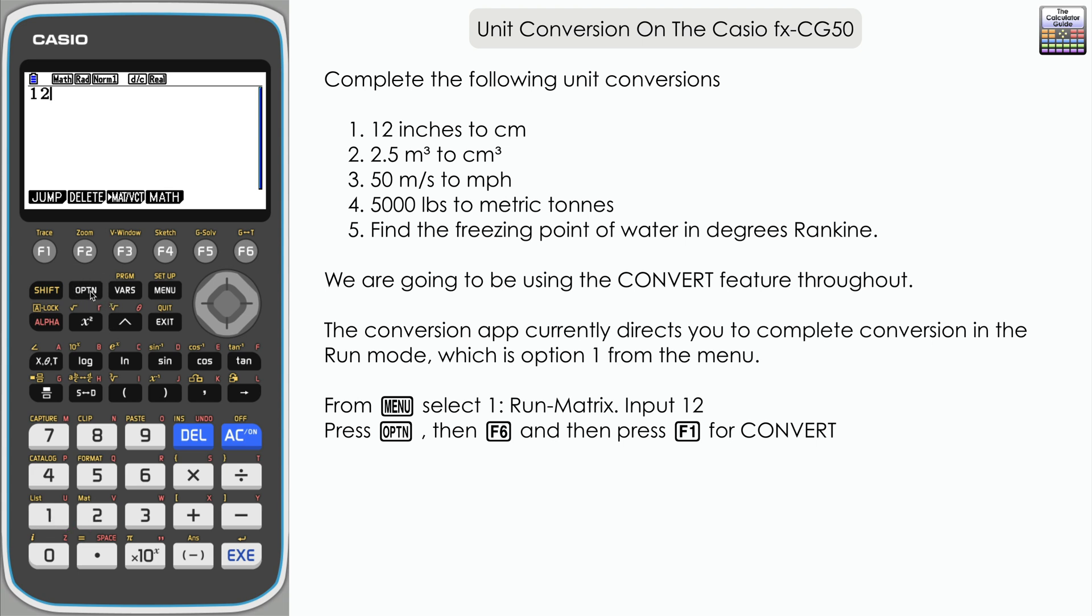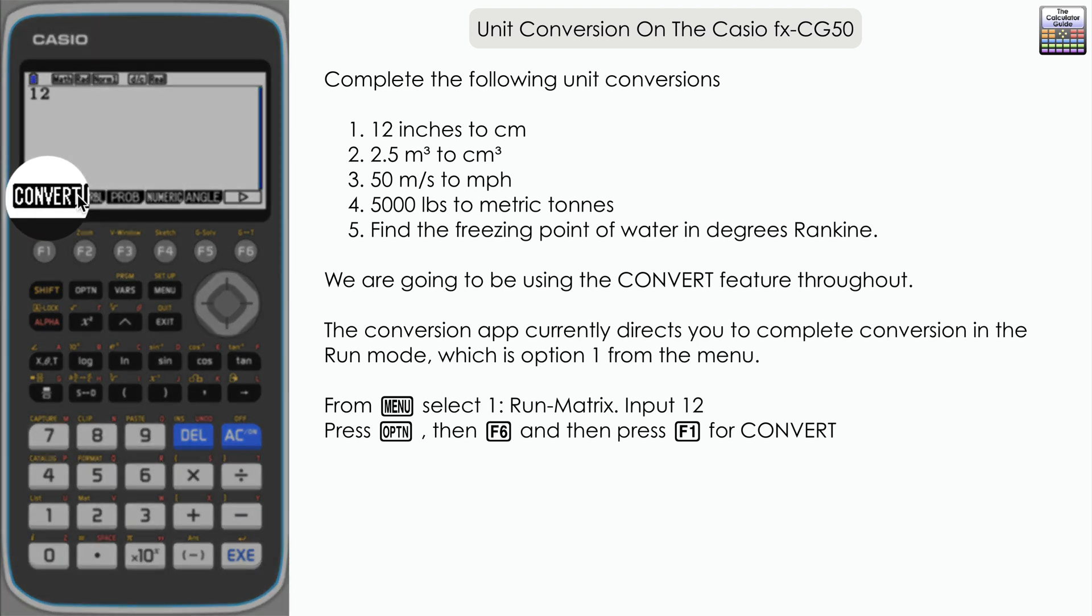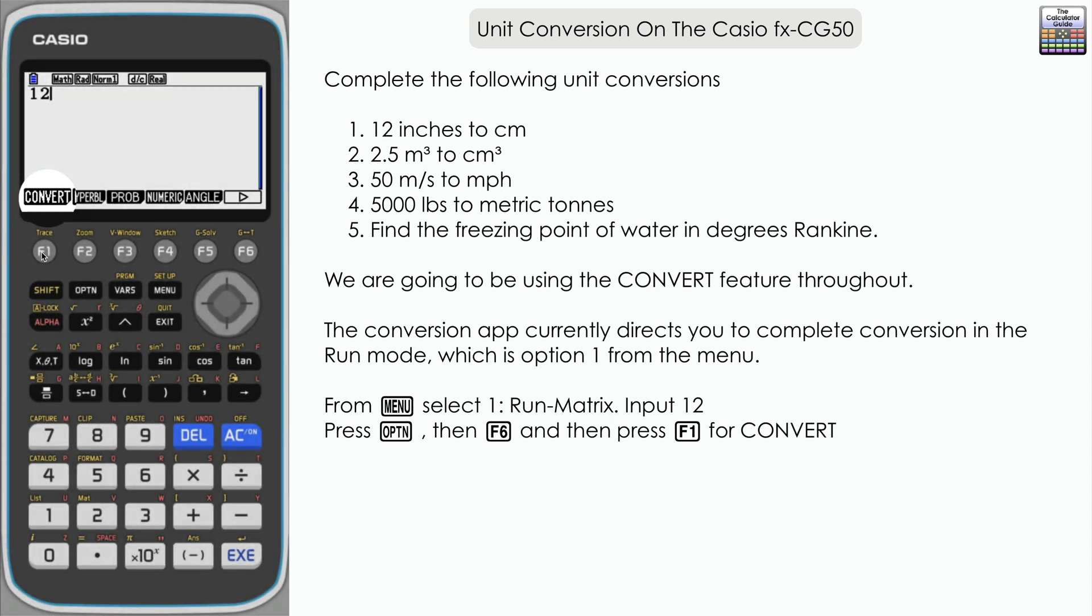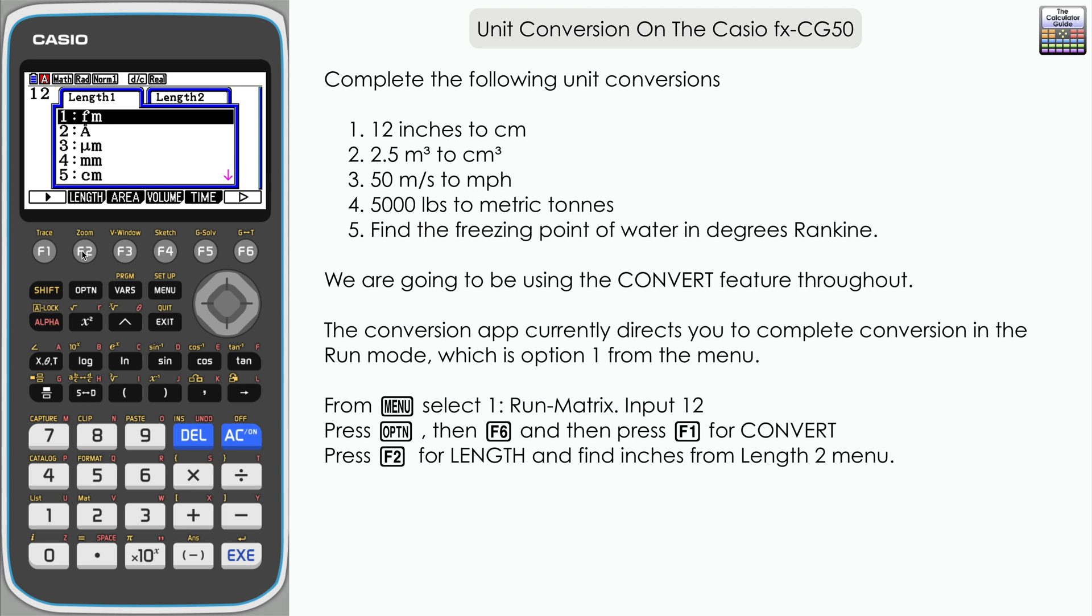We will press F6 to access the next set of choices. Here we go, F1 is convert and we've got a selection of different types of units here. Inches are a unit of length so we'll press F2 and we've got a variety of different options here. Now they're not preset in the way that they are on some of the other calculators, for example on the Casio ClassWiz FX 991EX.